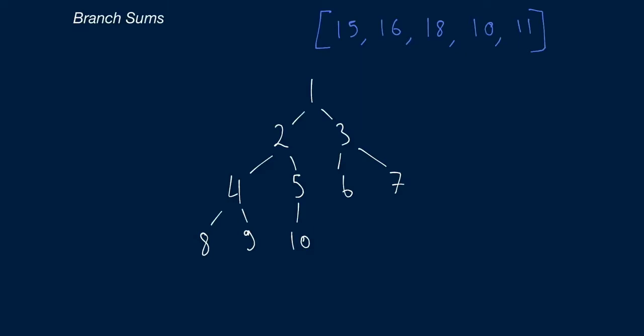What is a branch sum? It is the sum of all the values in a particular branch in the binary tree. And what is a branch? A branch is a path in the binary tree that starts at the root node — at the node with value 1 in the example — and ends at one of the leaf nodes. In our example, we've got five leaf nodes: 8, 9, 10, 6, and 7. Leaf nodes are the nodes at the very bottom of the tree.